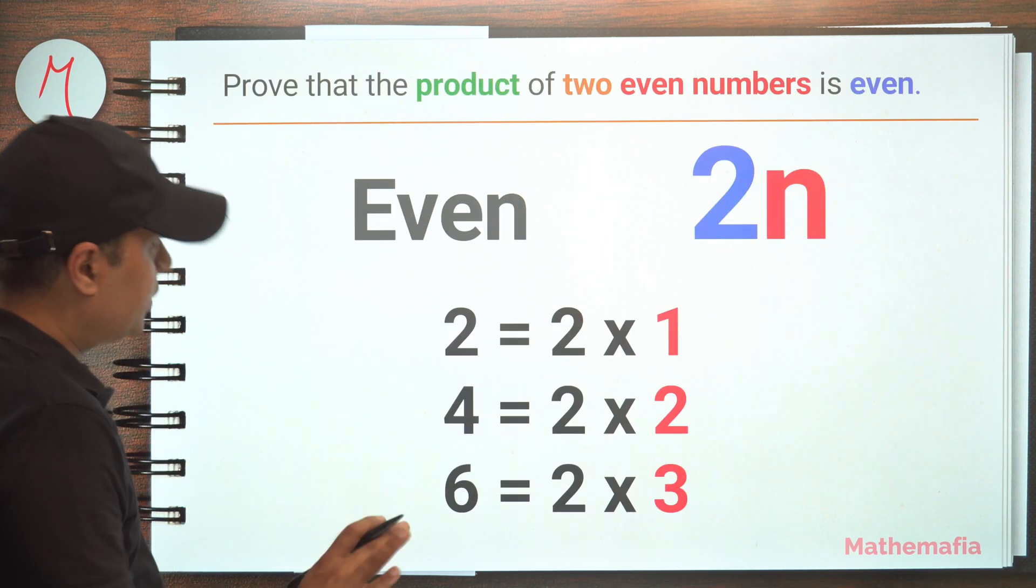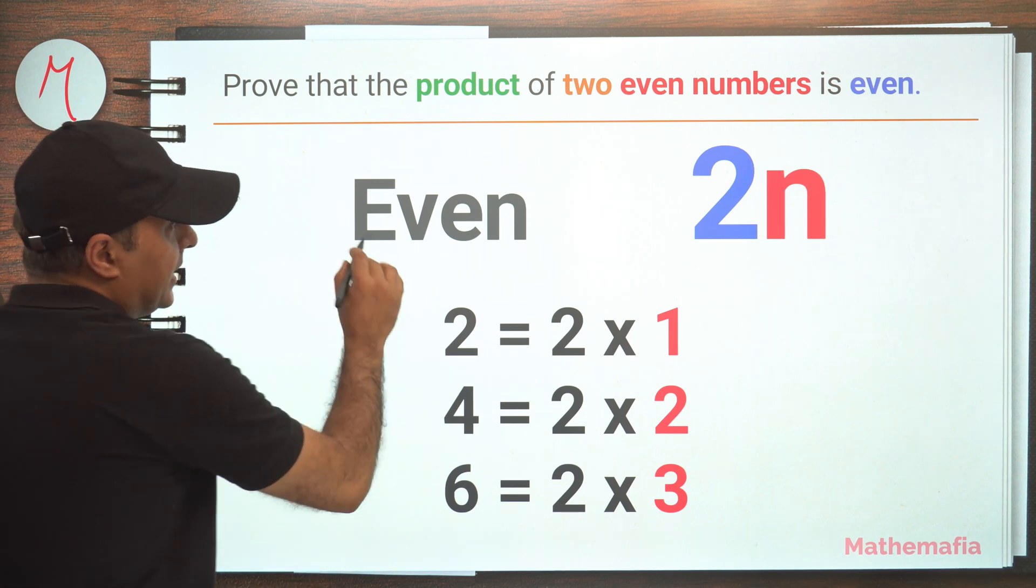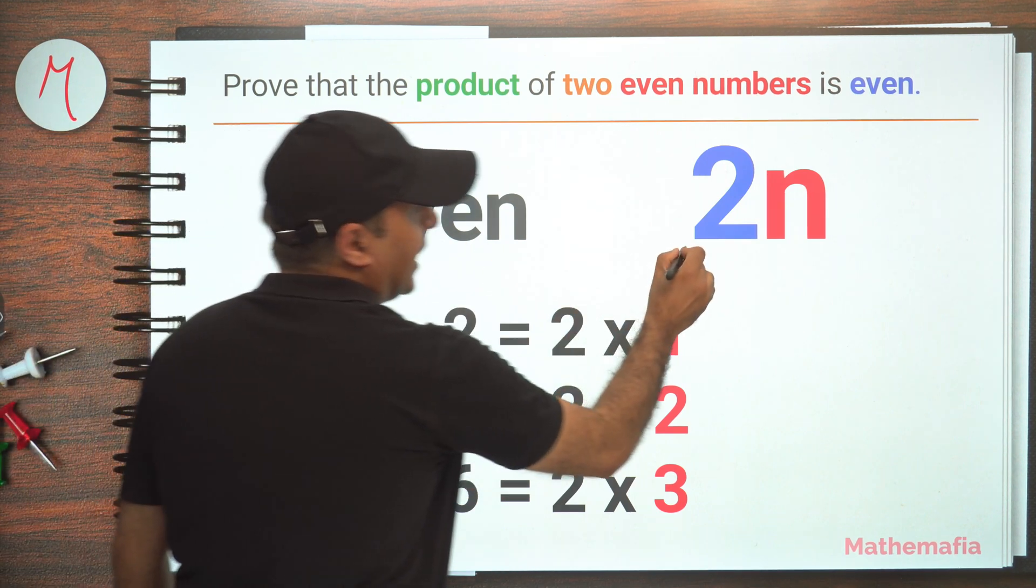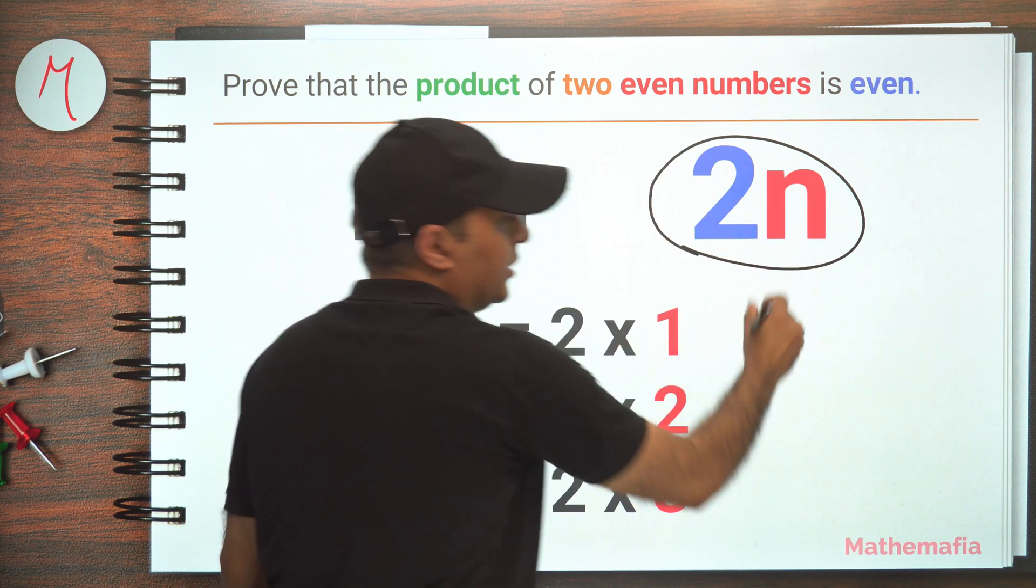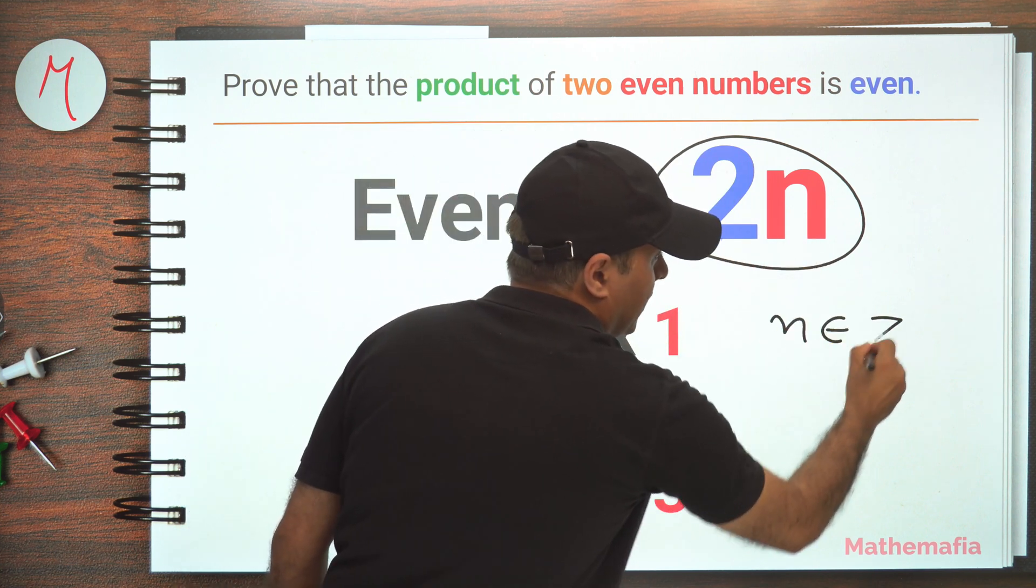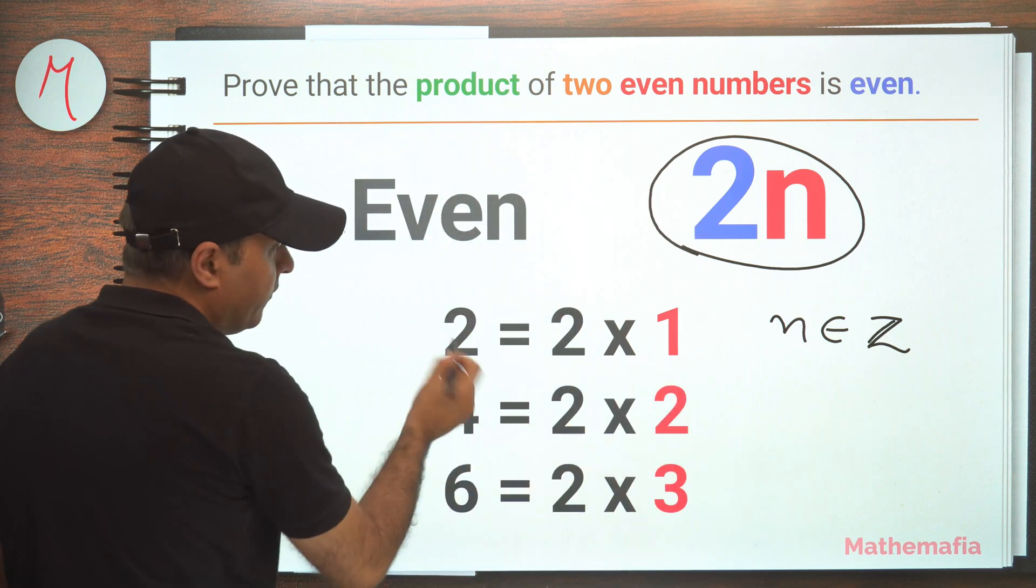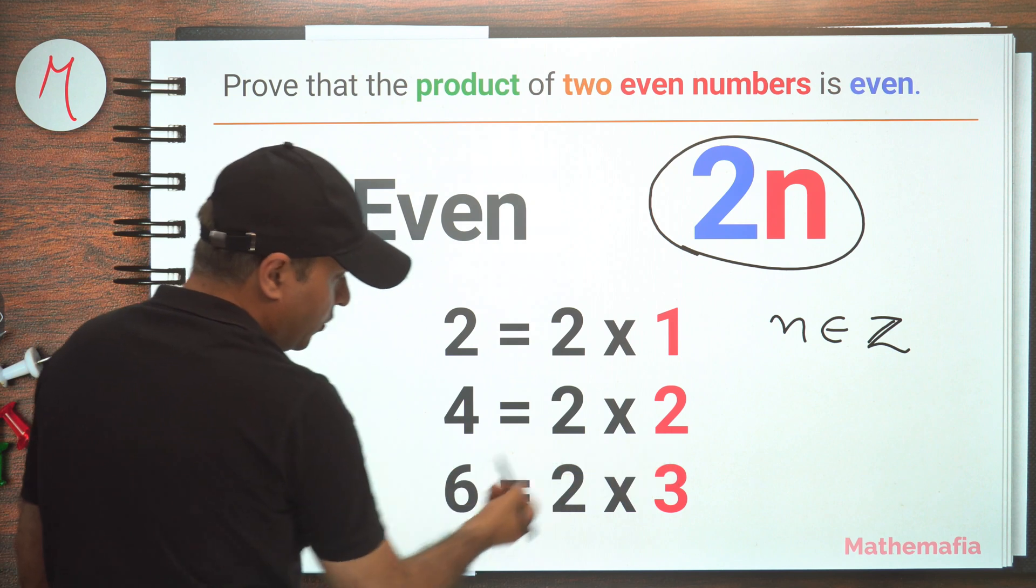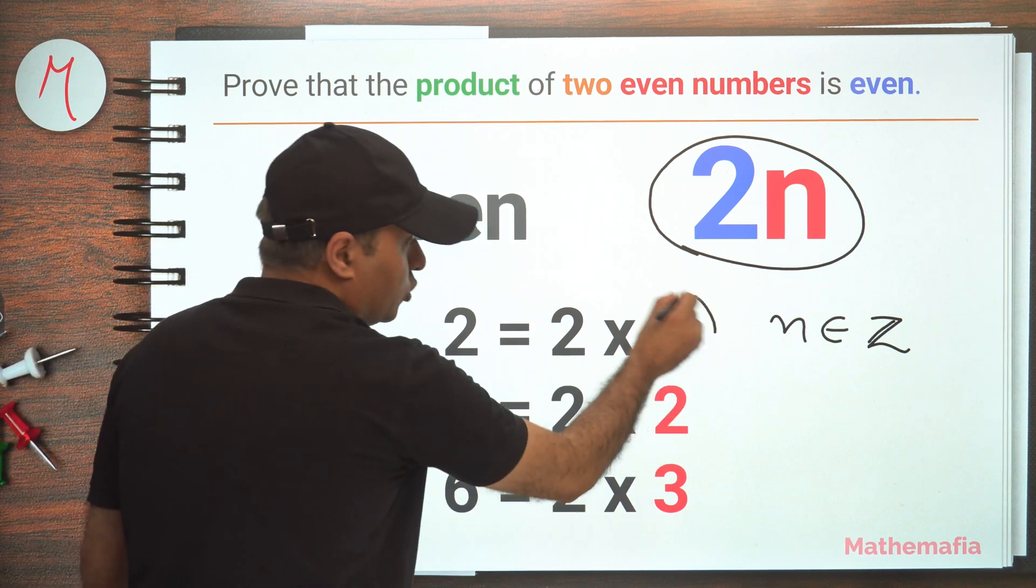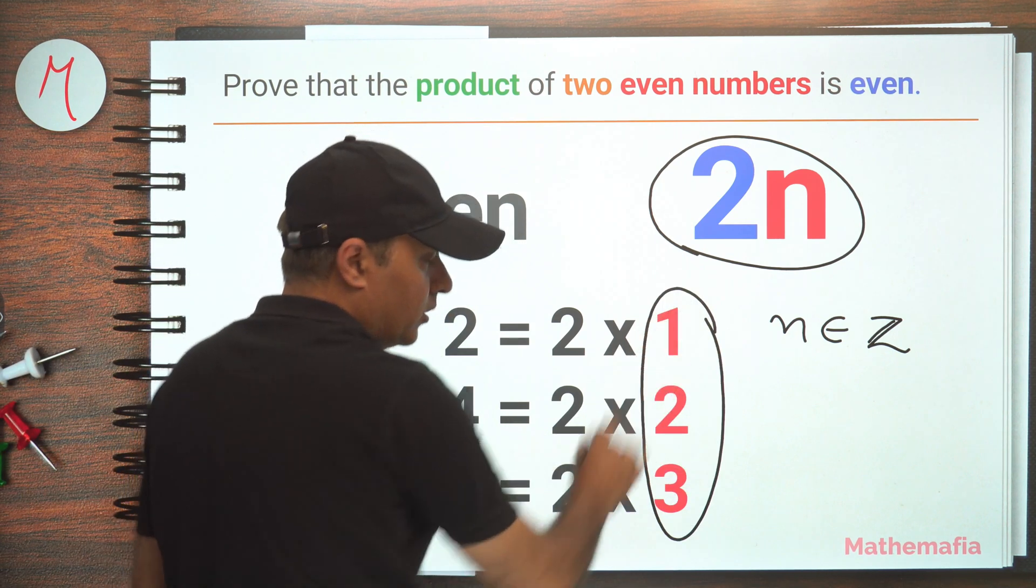Let's talk about it. We know that every even number can be written as 2 times n, which means 2 times an integer. So n is an integer. For example, 2 equals 2 times 1, 4 can be written as 2 times 2, 6 can be written as 2 times 3. So 2 times an integer.